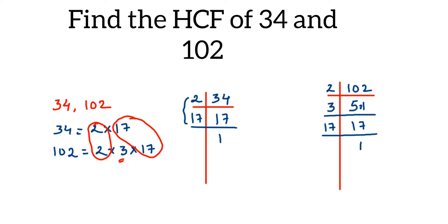So HCF of 34 and 102 will be—from each pair you take one factor. So from here I'll take one two, and from here I'll take one 17. So 2 times 17 is 34. So HCF of 34 and 102 is 34. That's it.